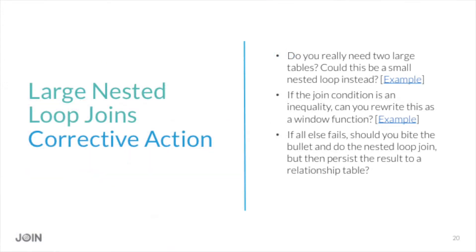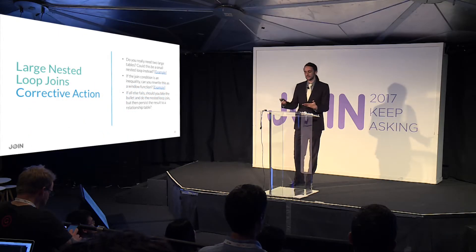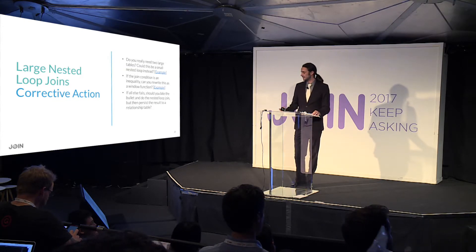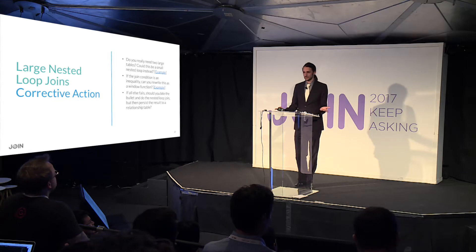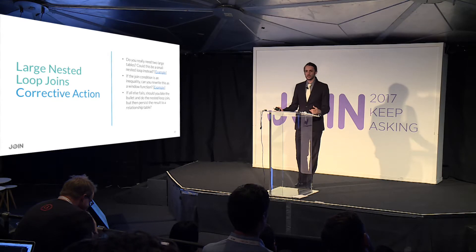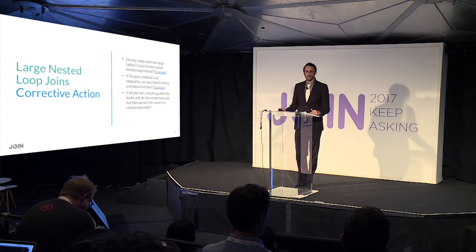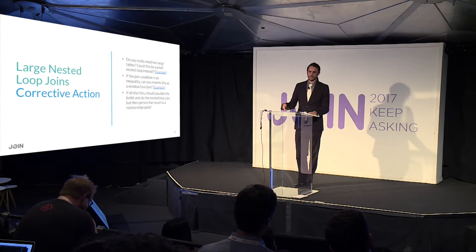It becomes a problem when there are large nested loop joins, so see if you can refactor into a small one. A typical example is date tables — see if you only care about 10 consecutive time periods and use a small table of 10 digits with a cross join, rather than crossing all possible dates. Another approach is to rewrite it as a window function. If you truly need a nested loop join, do it infrequently and persist the results back to a relationship table in your database, which you can then use in your explorers.